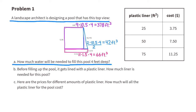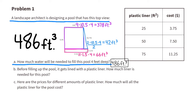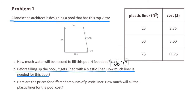This gives you the volume for each of the three sections of the pool. Add them together and you know how much water will be needed to fill the pool four feet deep. This pool holds 486 cubic feet of water. Part b: before filling up the pool it gets lined with a plastic liner — how much liner is needed?